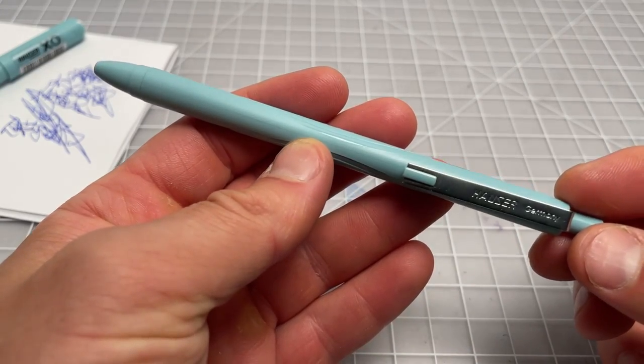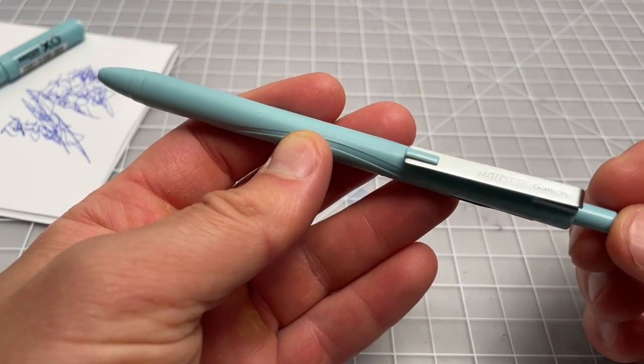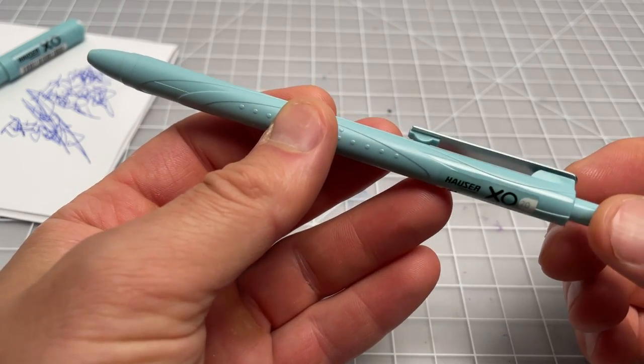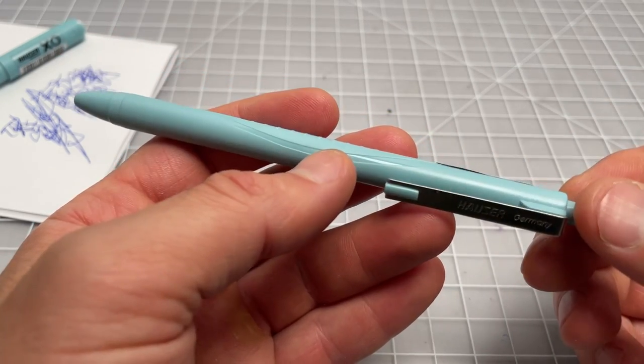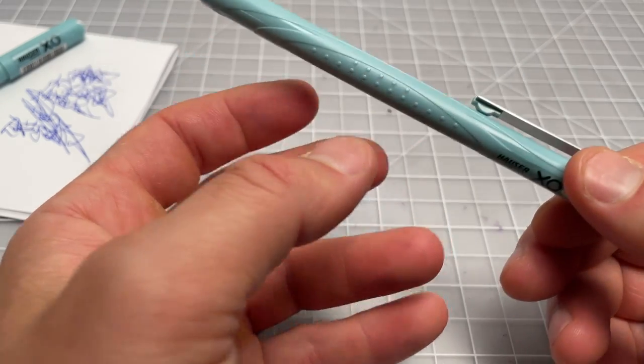Jump ahead a year, maybe two years, and Hauser has released this pen. This is the XO20, and also sold in multi-packs. This one's harder to find. It took me a while to hunt it down, and then the first time I bought it, the company actually sent me this pen, which was pretty annoying because I waited like three or four weeks.